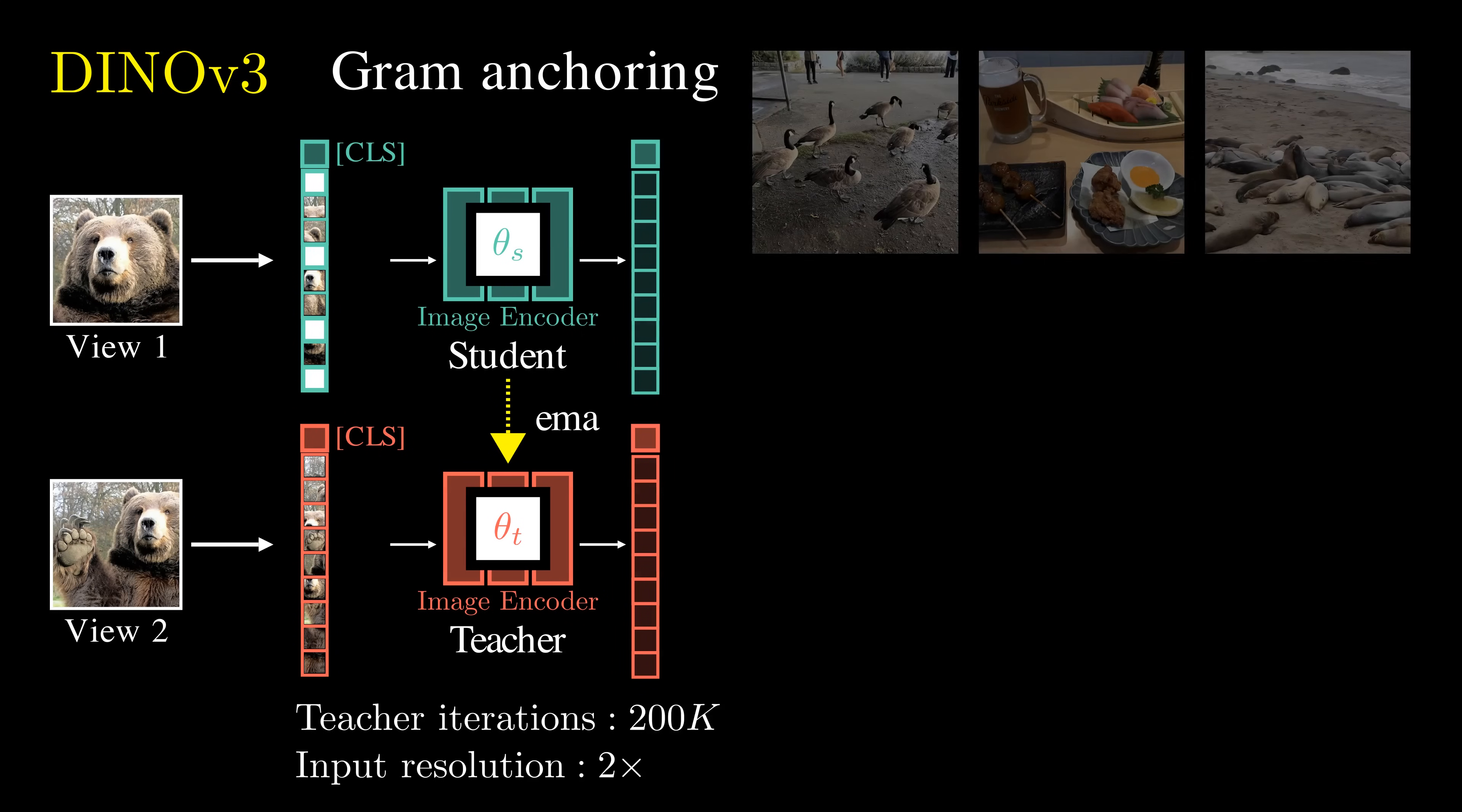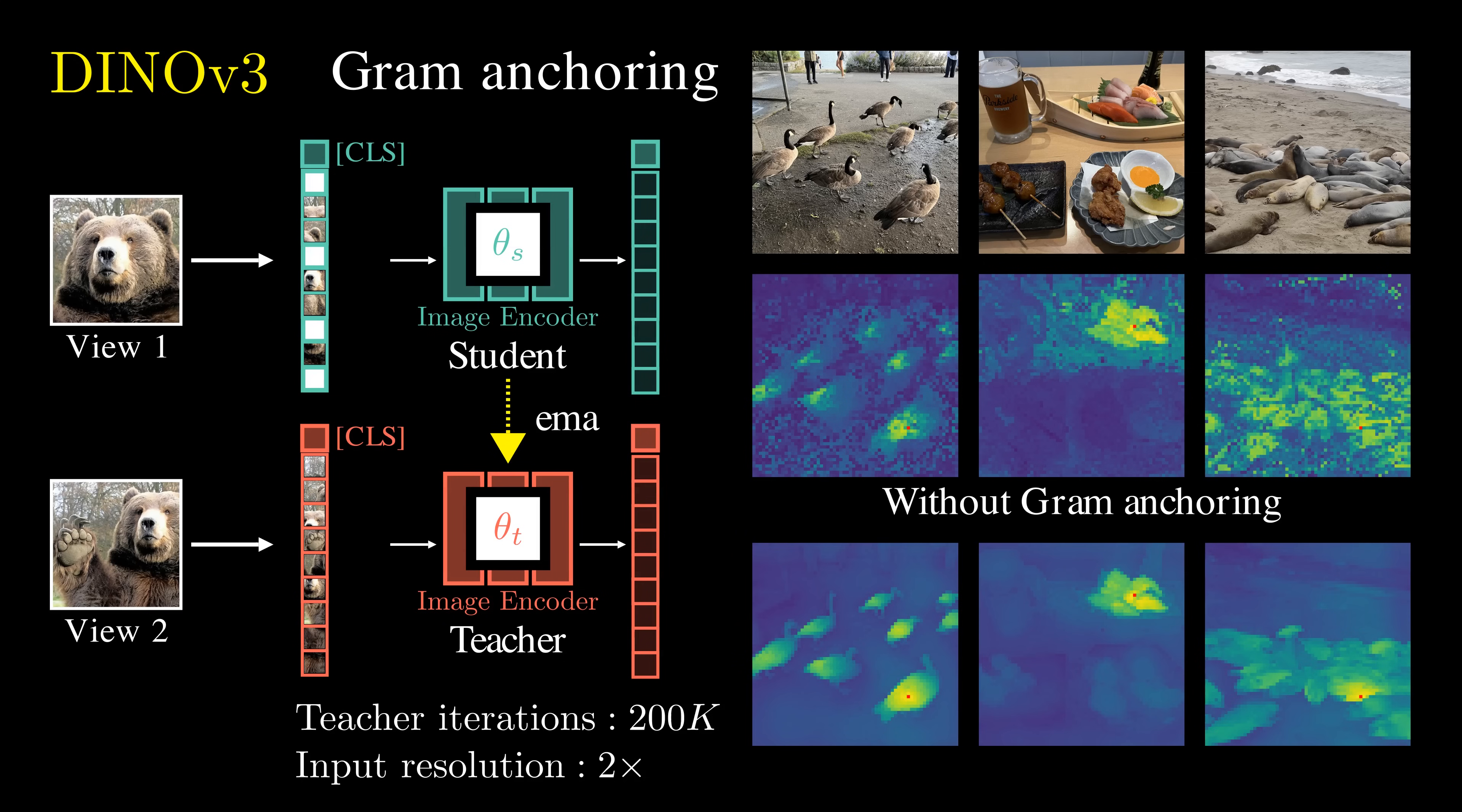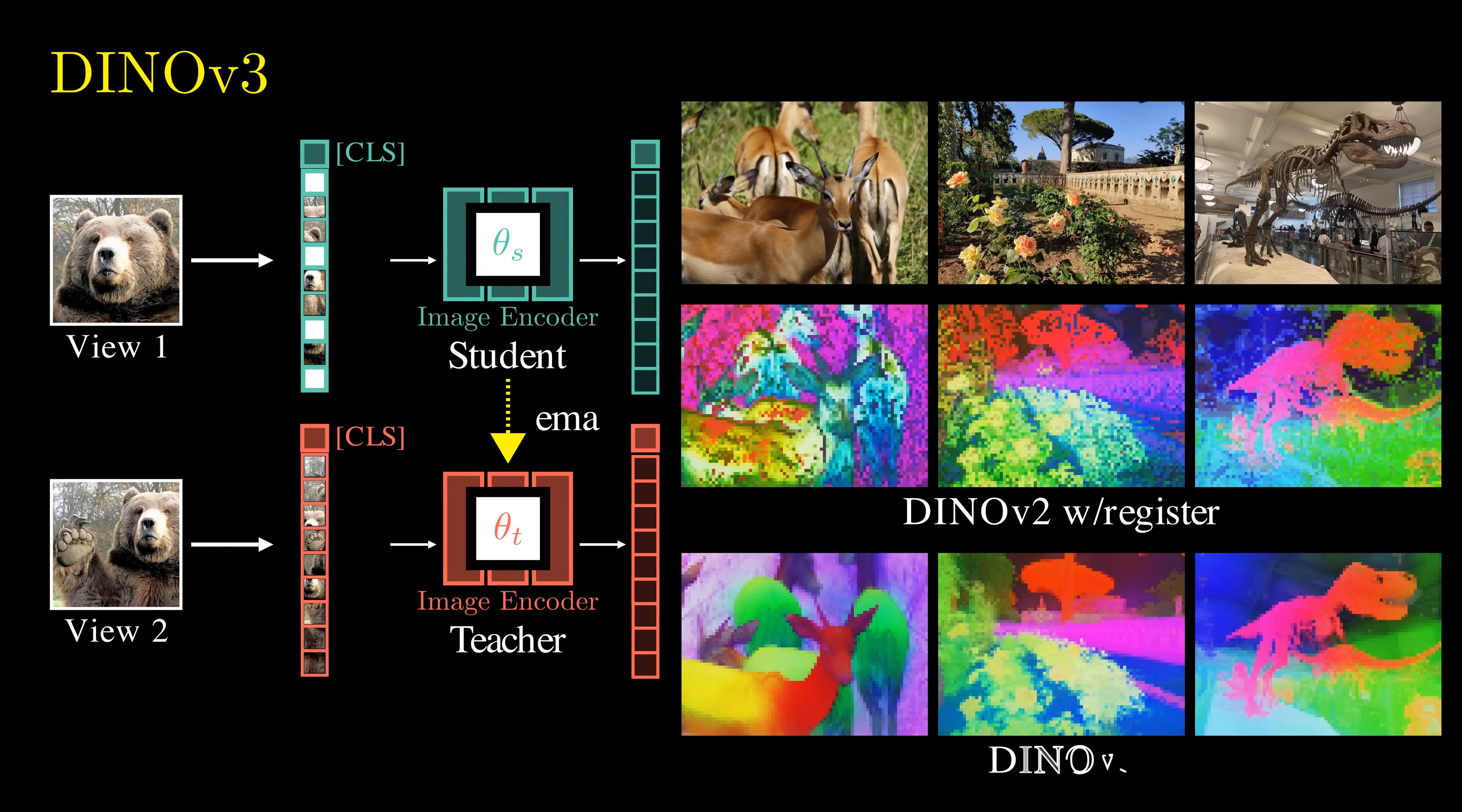When we compare the self-similarity maps before and after applying gram anchoring, we observe the spatial structures become much cleaner and more defined. Compared with the dense features from DINO v2, we see that the feature maps from DINO v3 are sharper, contain less noise, and show better semantic coherence.